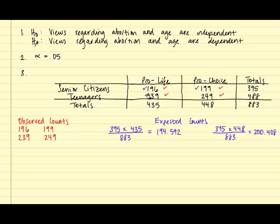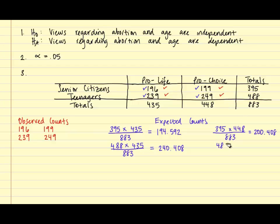For our third cell that has 239 in it, we're going to take its row total of 488 times its column total of 435, and divide by the sample size of 883, and we get 240.408. And finally for the last cell, we're going to take its row total of 488 times its column total of 448, and divide by the sample size of 883, and we get a result of 247.592.